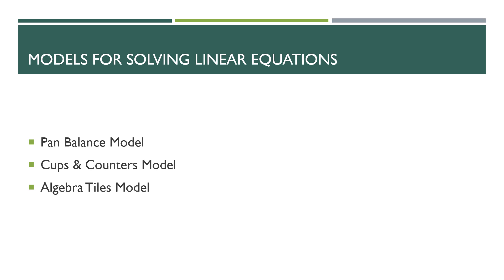To sum up what we did: we looked at three models for solving linear equations — the pan balance model, the cups and counters model, and the algebra tiles model. They each have their own advantages. If you have access to a pan balance, that's a great way to model that you have to keep the equation in balance while solving for a variable. The cups and counters model is more accessible because you as the teacher can create it yourself. The algebra tiles model is great for solving equations that involve a subtraction or negative symbol.